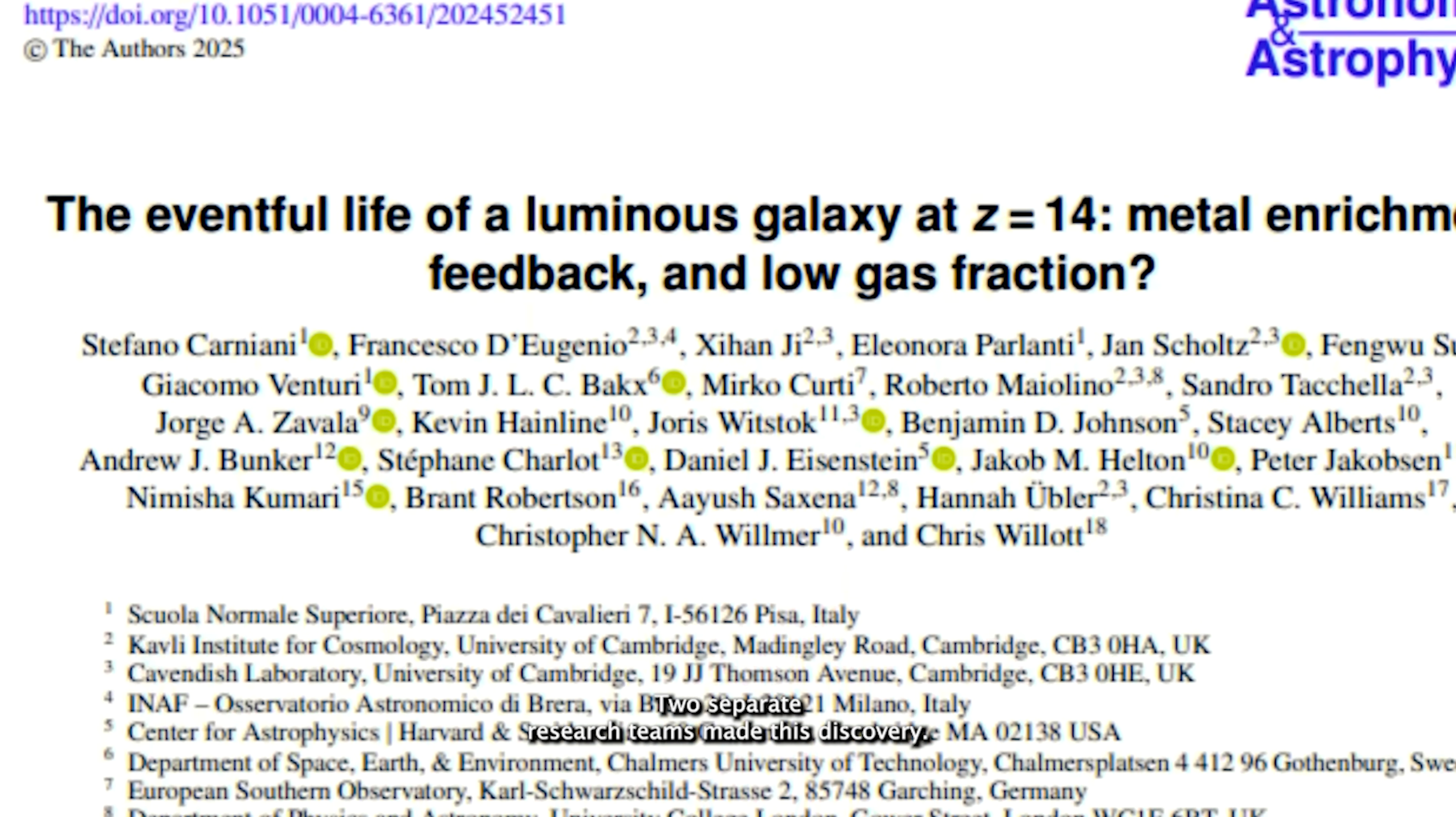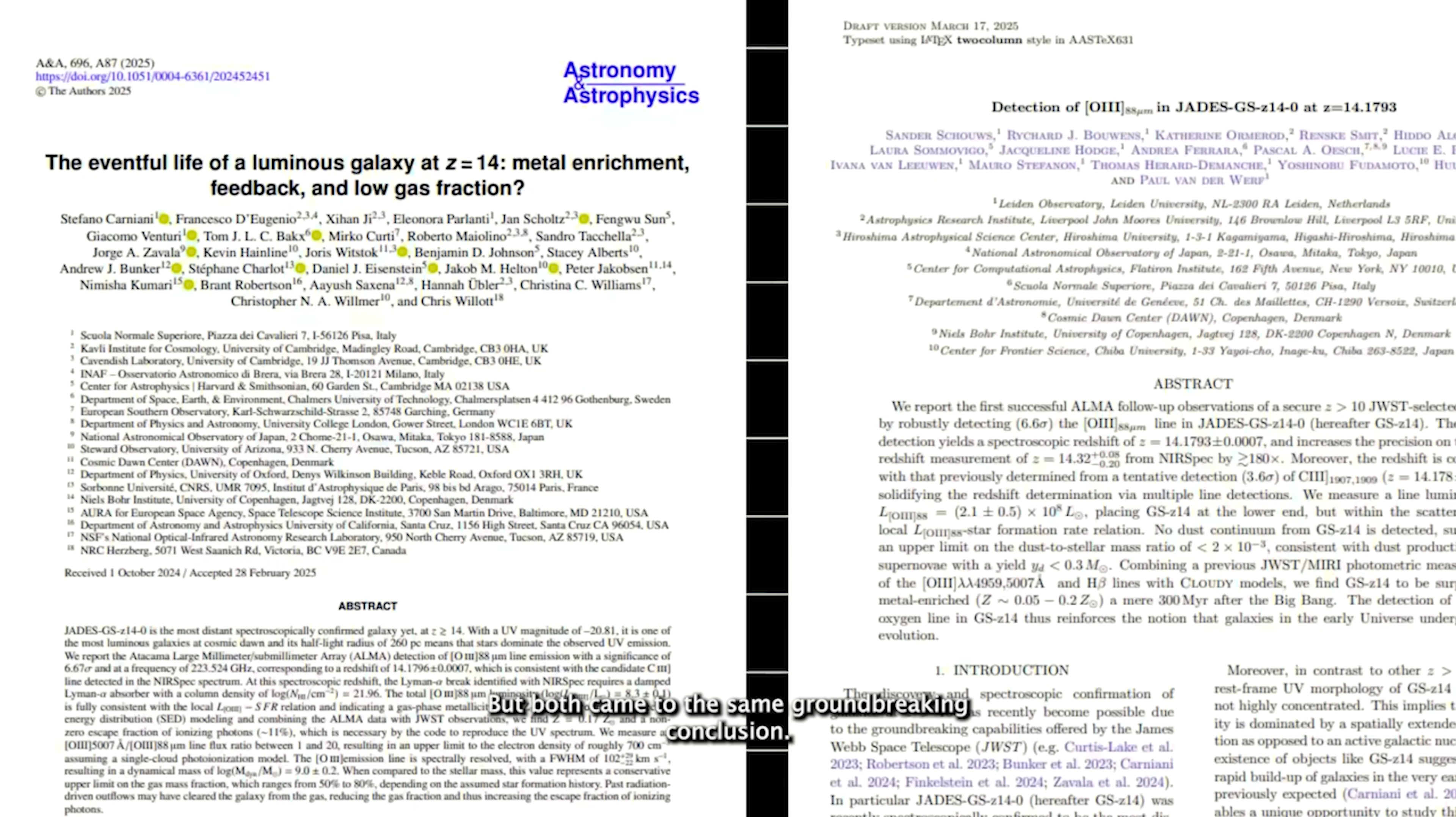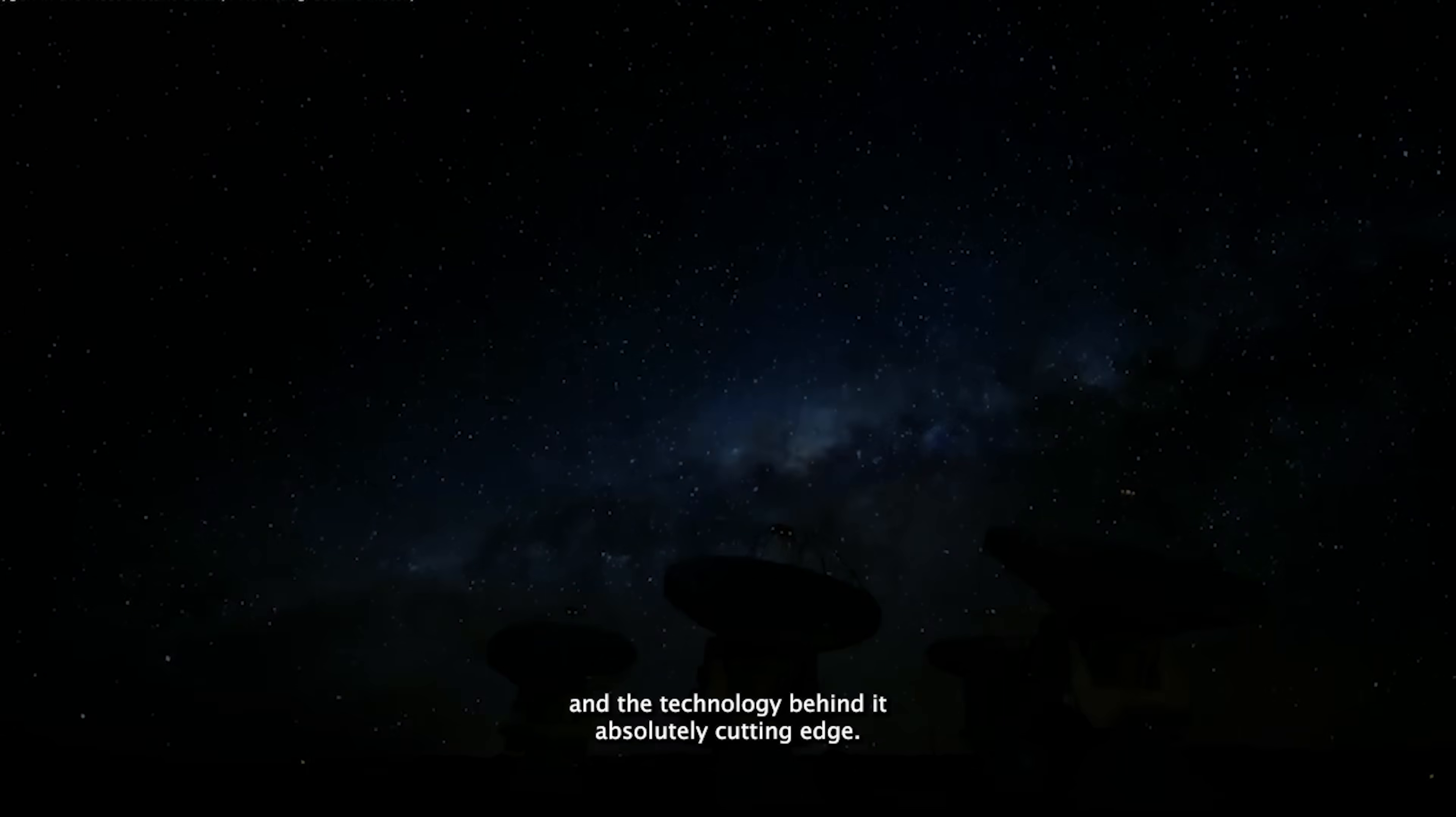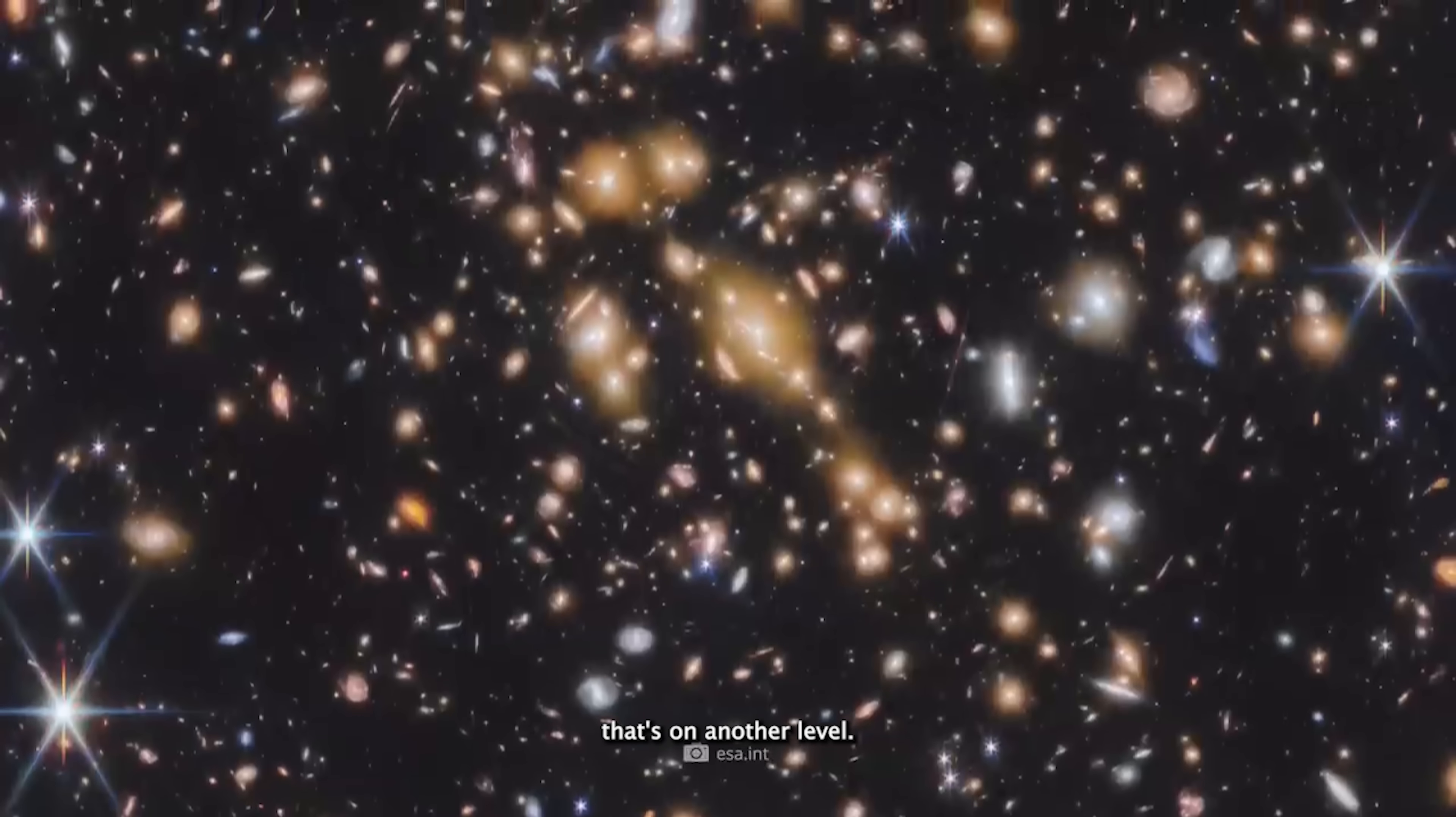Two separate research teams made this discovery. One led by Stefano Carniani from Italy, the other by Sander Schaus from the Netherlands. They each published their results in top-tier journals, Astronomy and Astrophysics and the Astrophysical Journal, using different techniques, but both came to the same groundbreaking conclusion. Oxygen is really there. This double confirmation makes the finding rock solid. And the technology behind it? Absolutely cutting edge. Just spotting a galaxy this far away is already a monumental task. But actually detecting specific elements inside that galaxy? That's on another level.